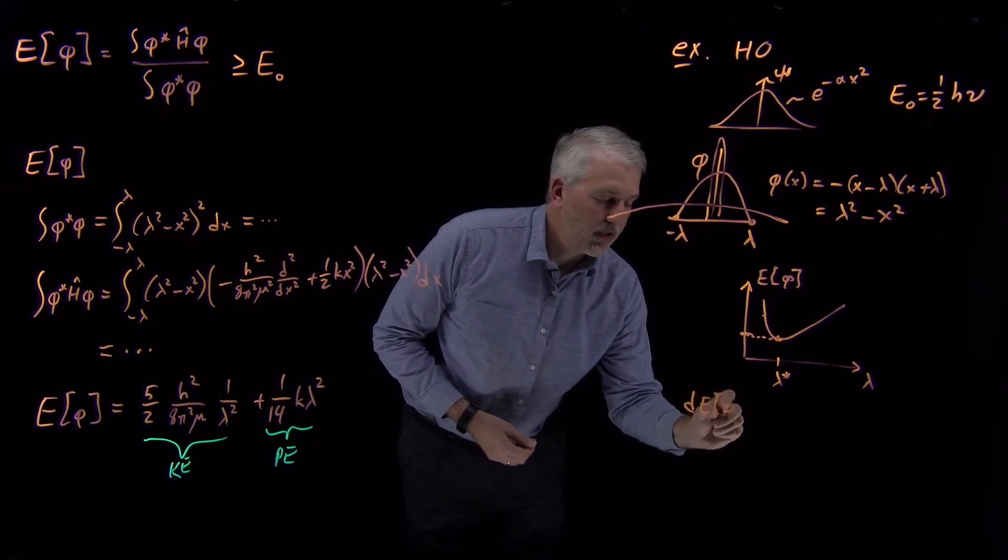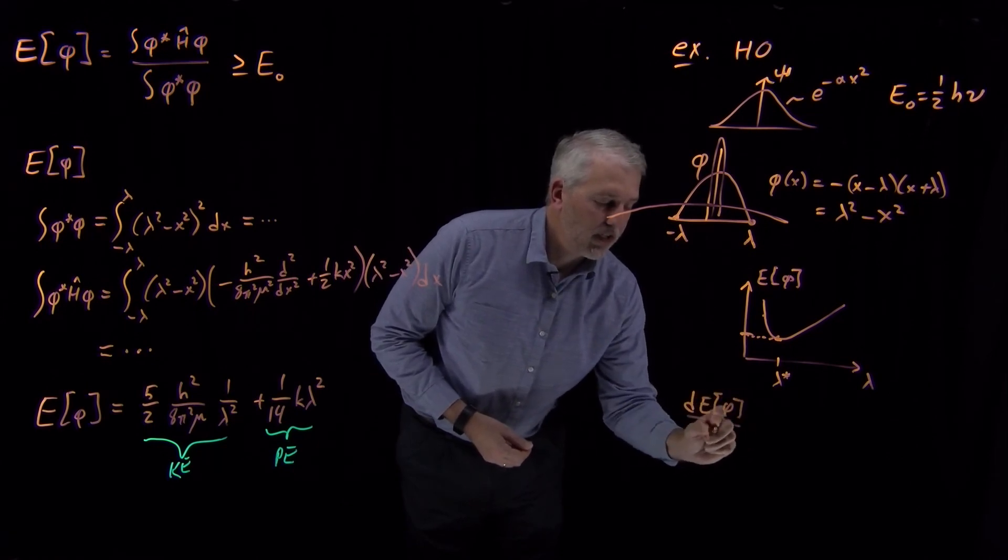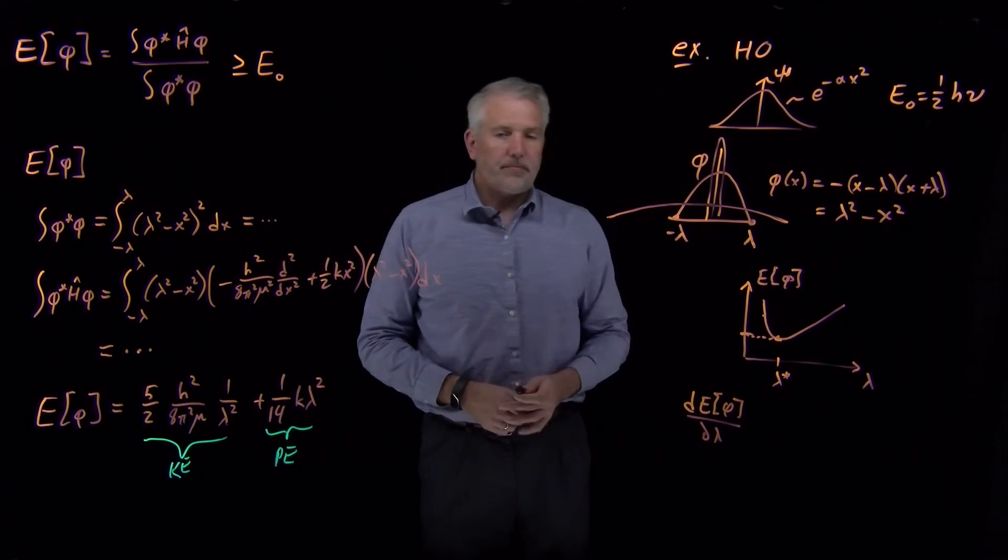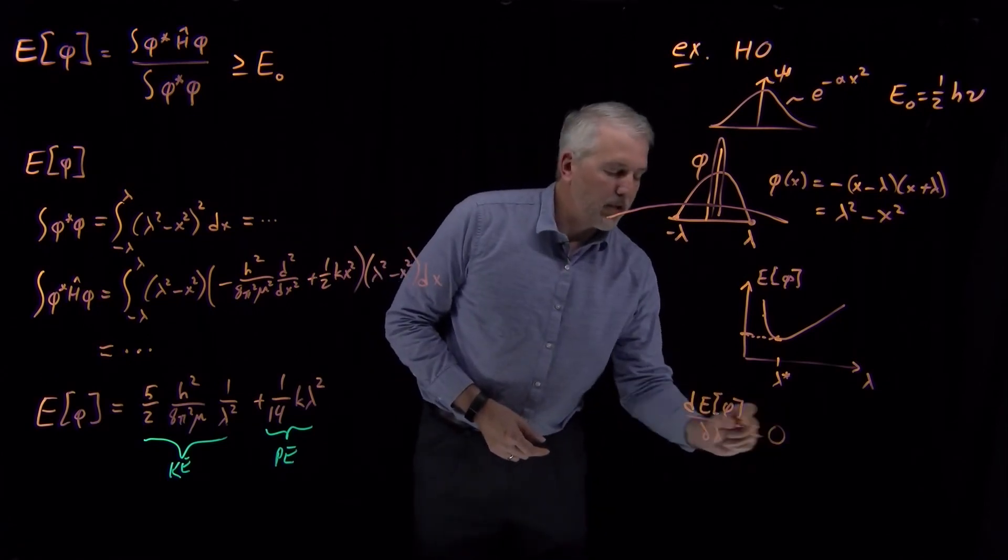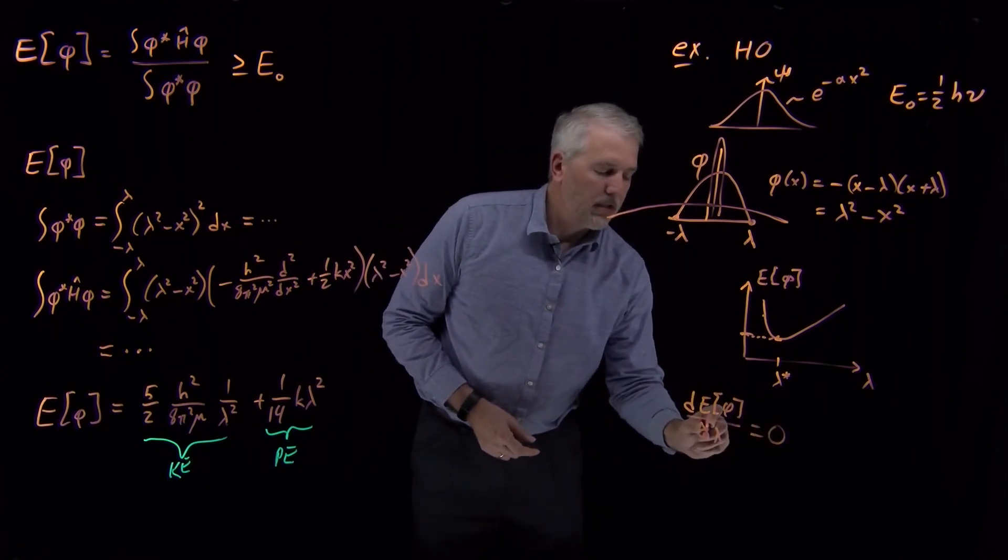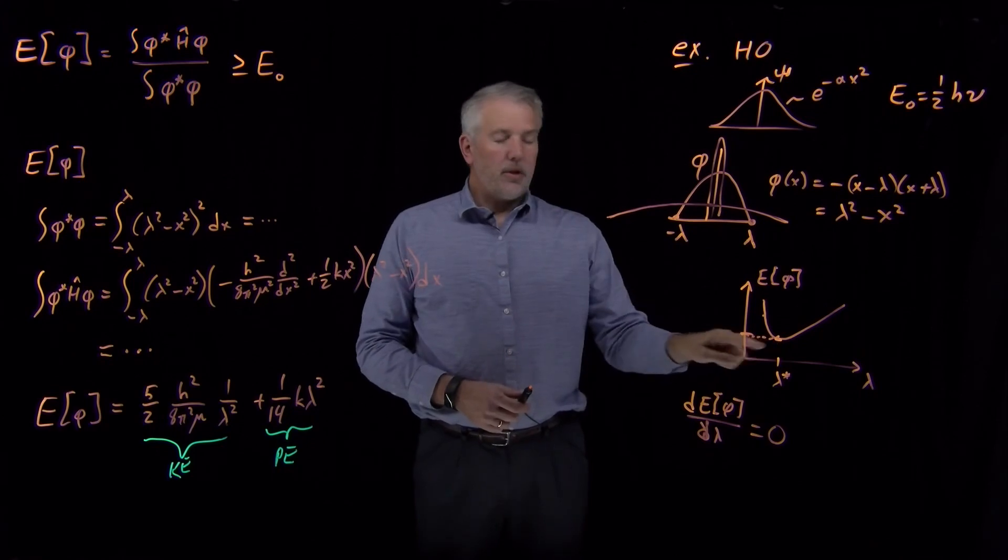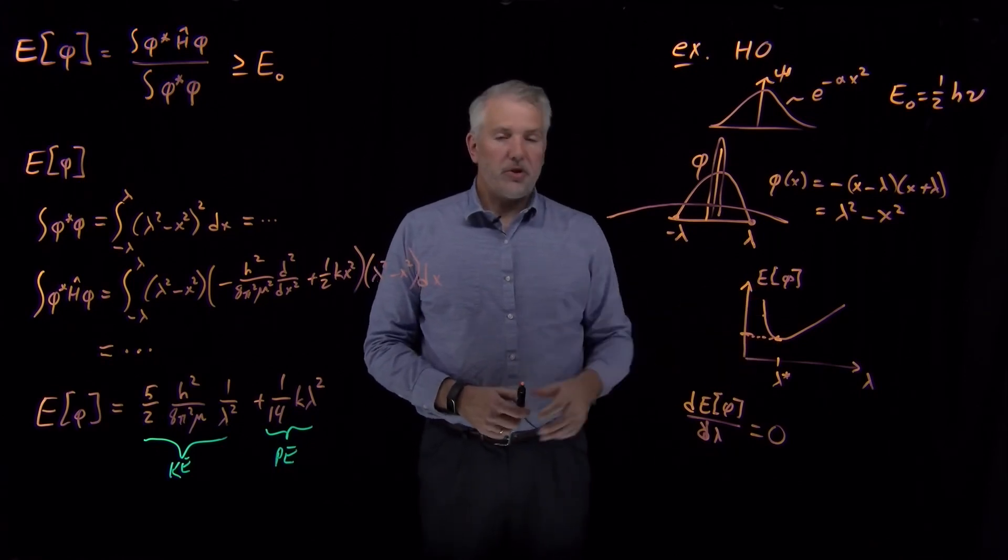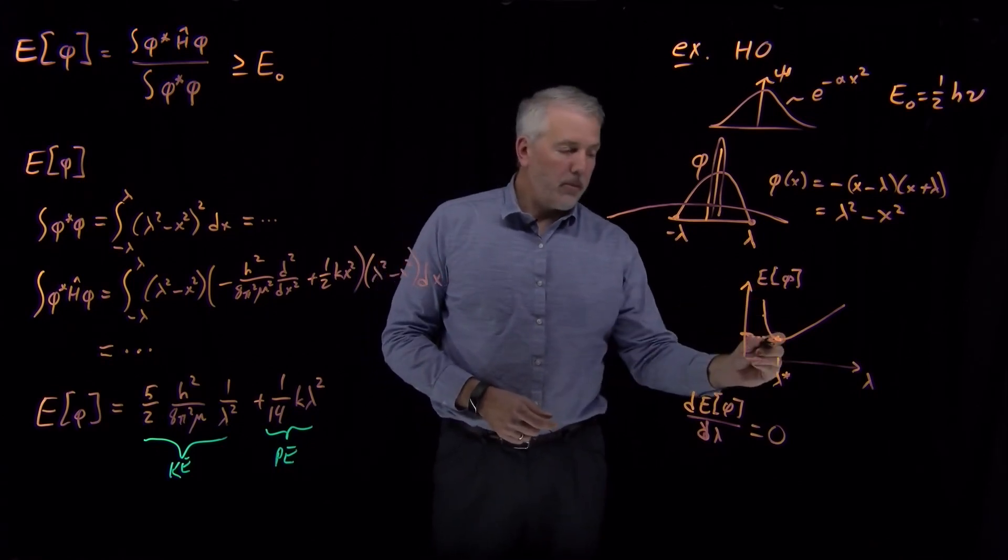If I find the lambda value for which the derivative of the variational energy with respect to lambda reaches zero, I found the minimum of this function.